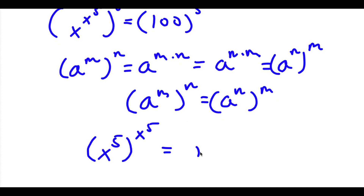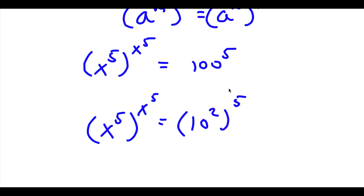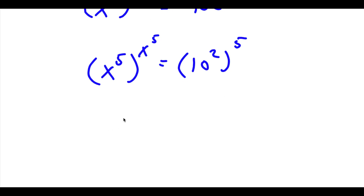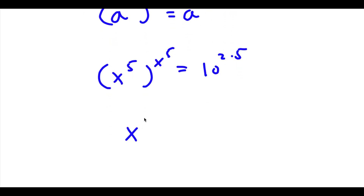This is equal to 100 to the power of 5. Now 100 is equal to 10 squared, so I have x to the power of 5 to the power of x to the power of 5 is equal to 10 squared to the power of 5. If I have something in the form a to the power of m to the power of n, this is equal to a to the power of m times n. So 10 to the power of 2 to the power of 5 equals 10 to the power of 2 times 5, and 2 times 5 is 10, so I have x to the power of 5 to the power of x to the power of 5 is equal to 10 to the power of 10.